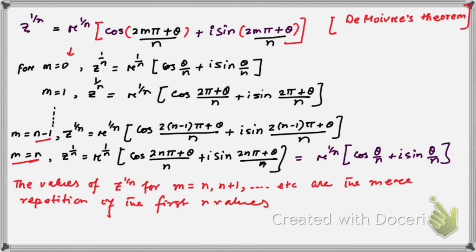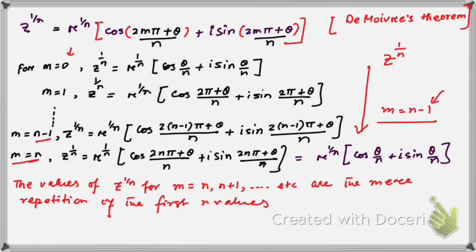That is why we find the roots of a complex number only up to m = n−1. If we need to find the nth root of z, we put m = 0, 1, 2, …, n−1. This is how we find z^(1/n), the nth root of a complex number.